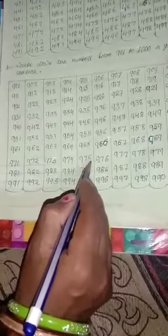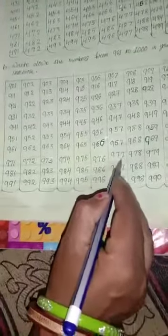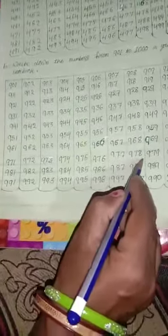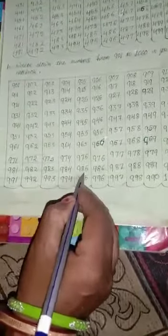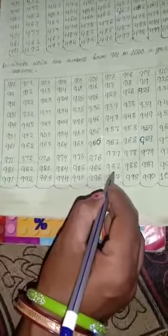971, 972, 973, 974, 975, 976, 977, 978, 979, 980, 981, 982, 983, 984, 985, 986, 987, 988, 989, 990.